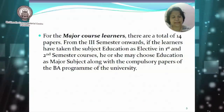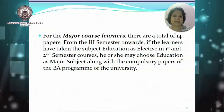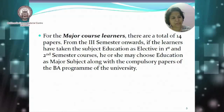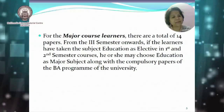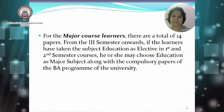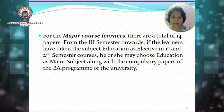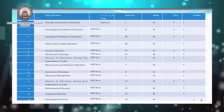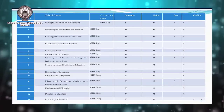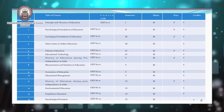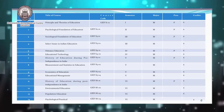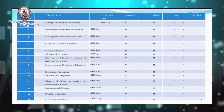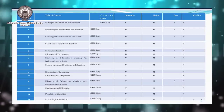For the major course learners, there are a total of 14 papers from the third semester onwards. If the learner has taken the subject education as elective in the first and second semester, he or she may choose education as a major subject along with the other compulsory papers of the BA program. From the third semester onwards, along with the paper Sociological Foundation of Education, the learners have to take other papers including Select Issues in Indian Education.